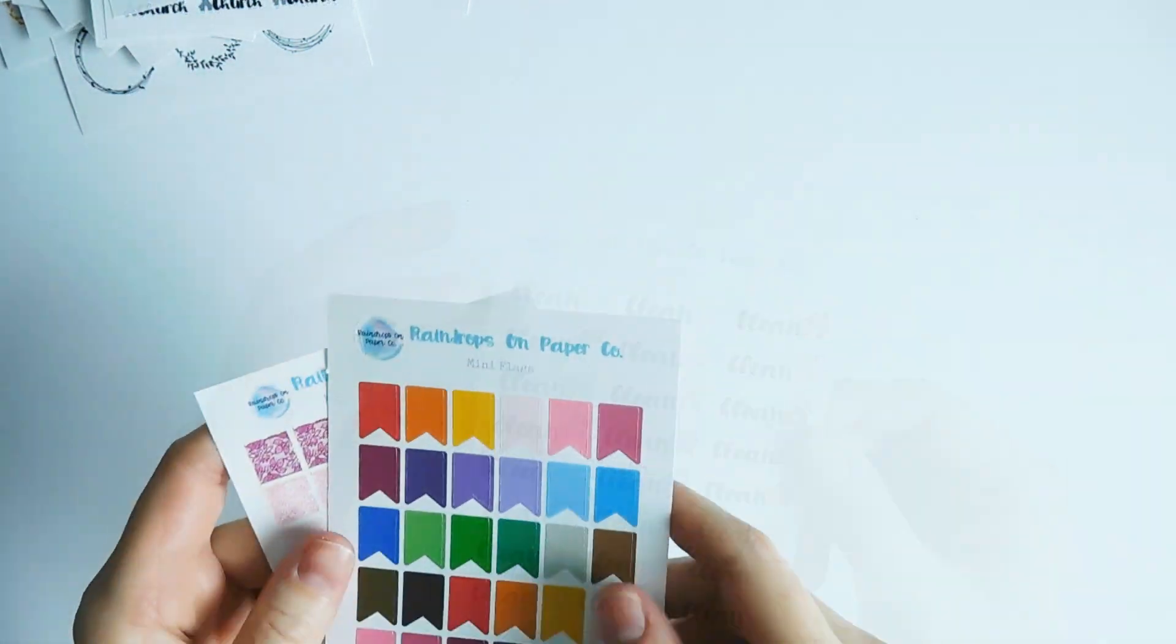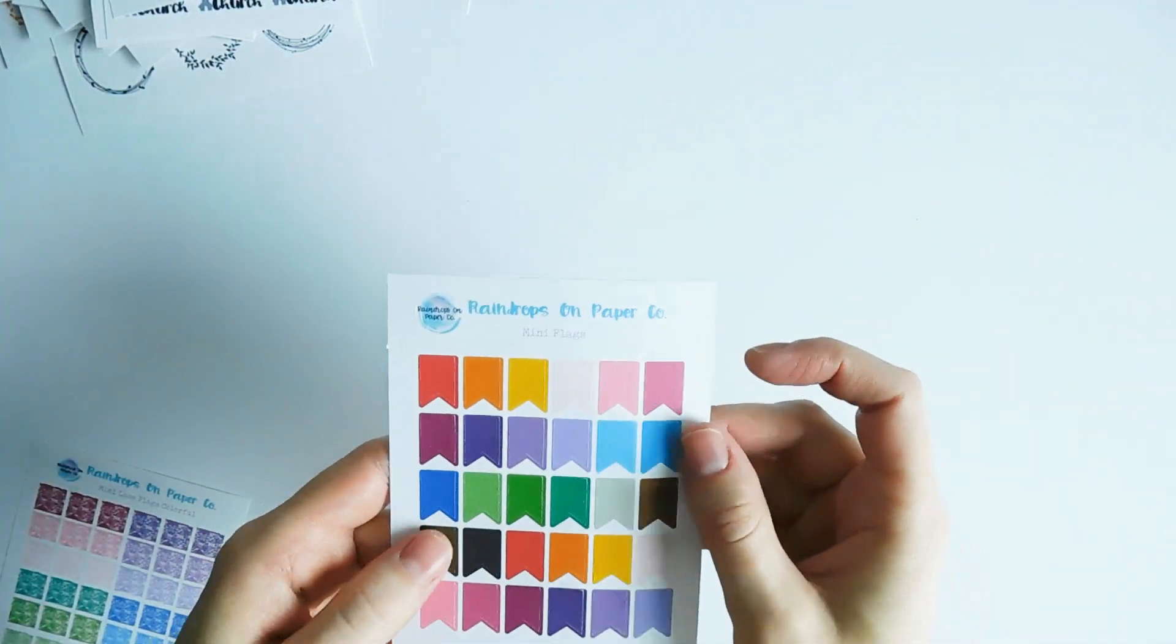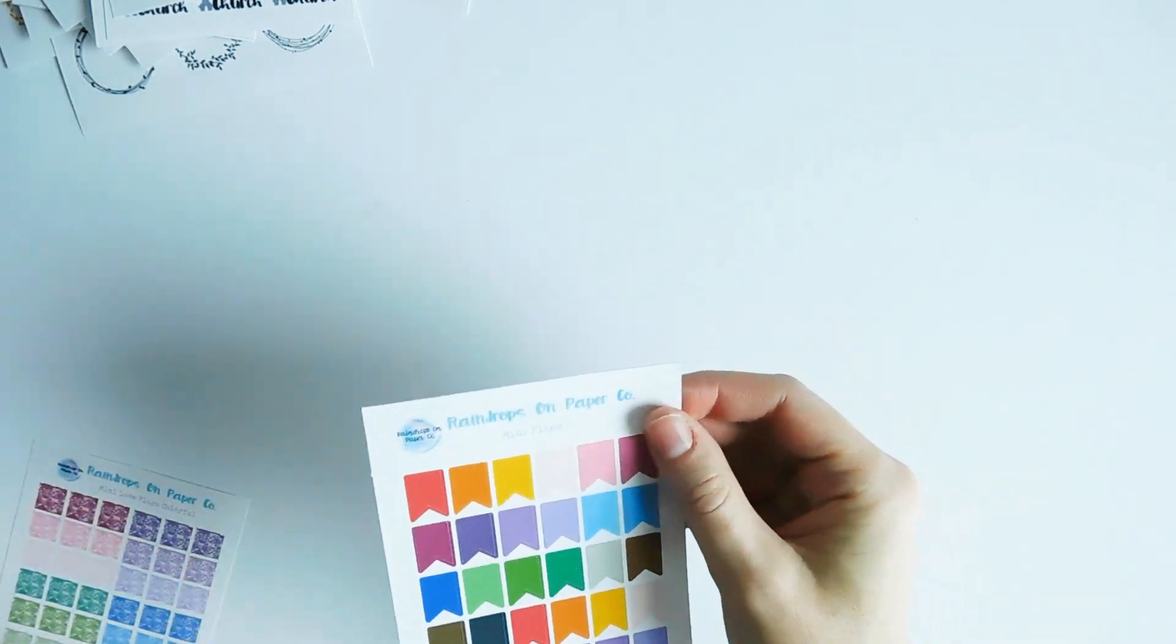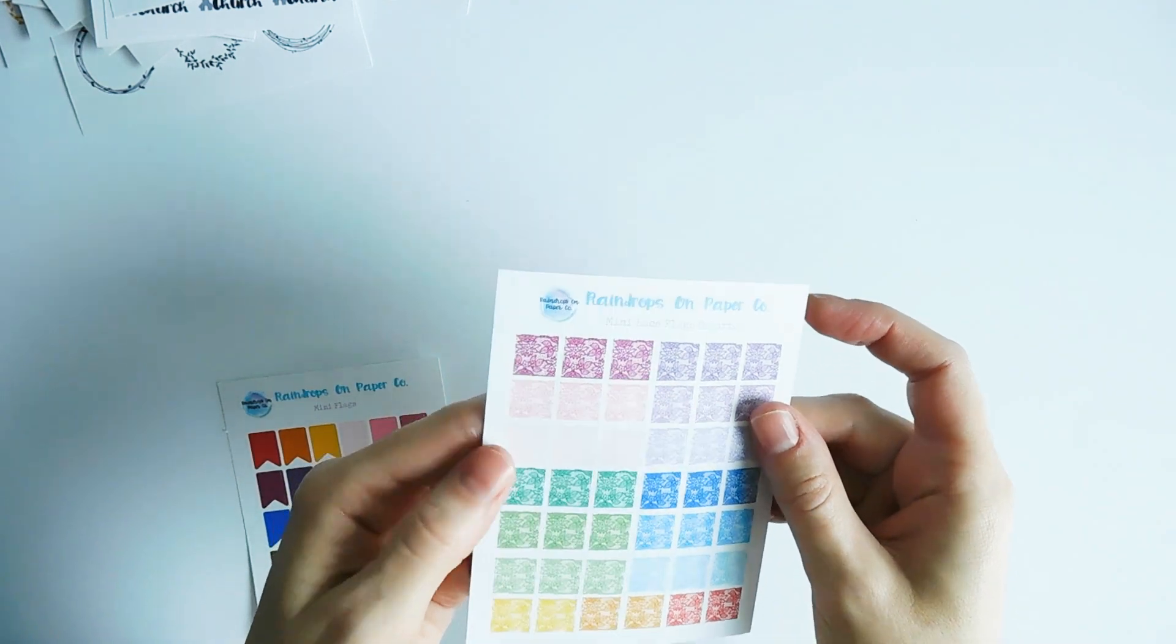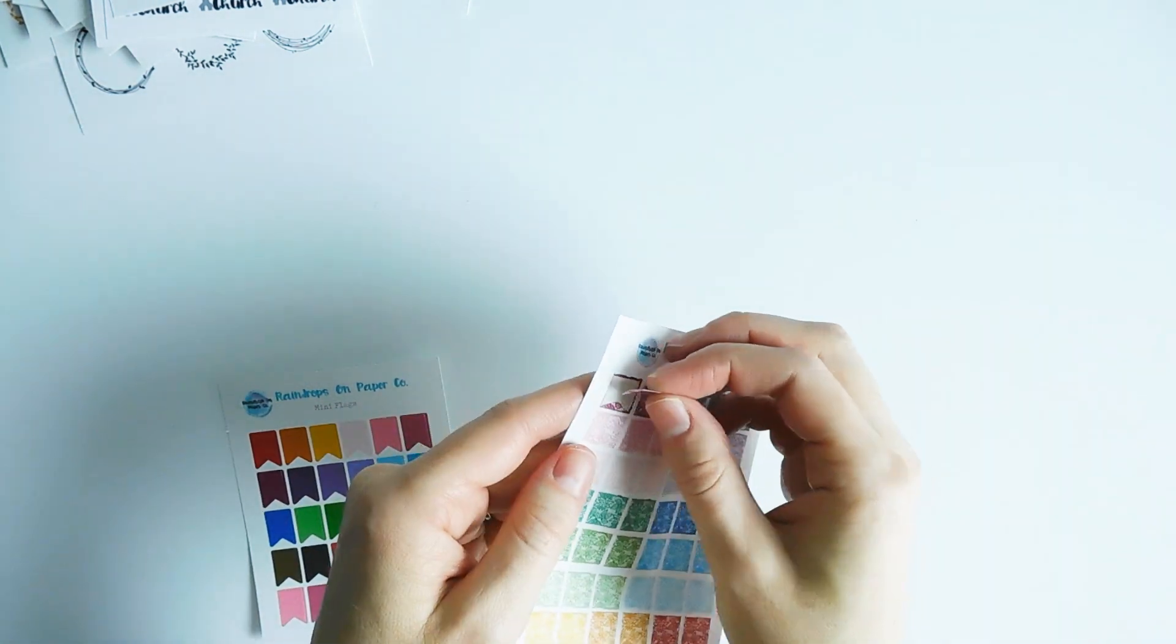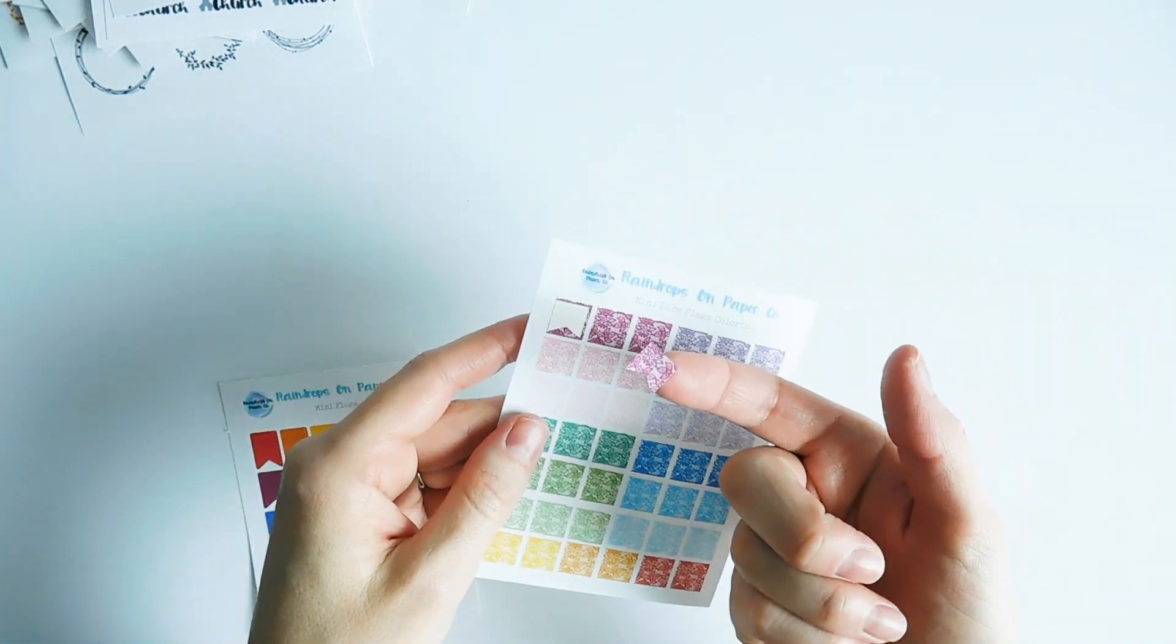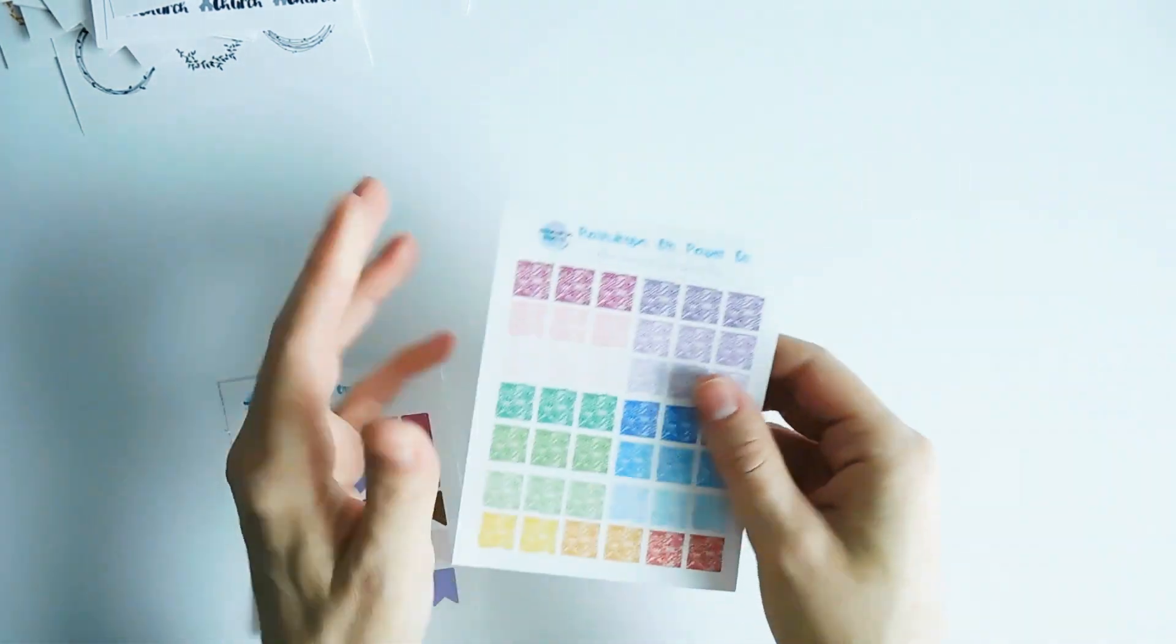And I offer mini flags. These are just a variety of mini deco flags. I'm also coming out with these mini lace flags. They're in the lace design like the boxes that I showed. They look like squares on the sheet but they actually come off like this. These are not up yet in my shop, but I'm working on the listing now.